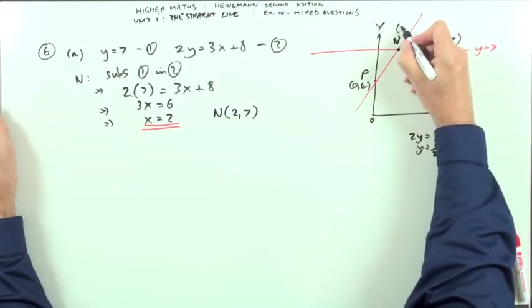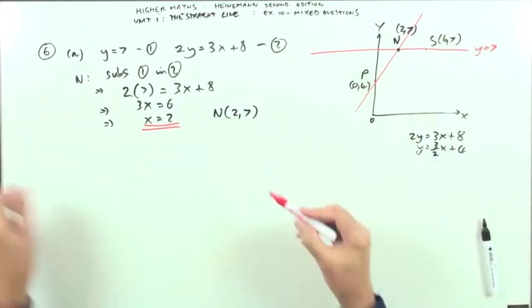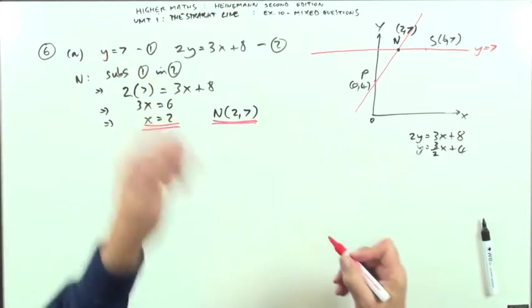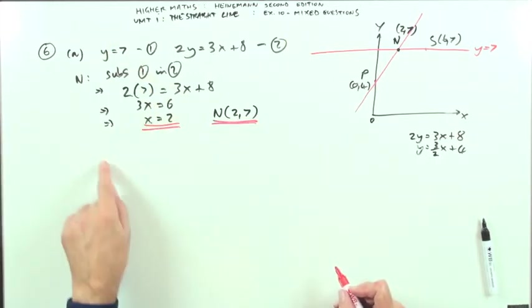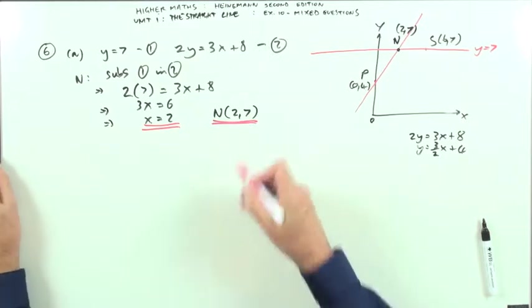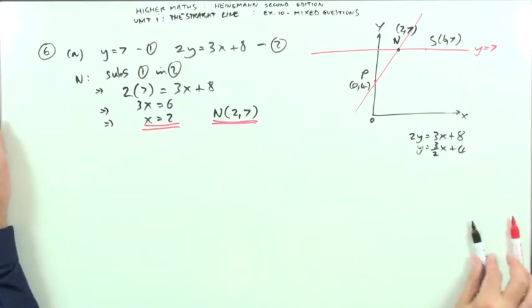So N is the point (2,7). Or maybe we should write it out the way the question was asked for: centre of symmetry (2,7). I'll just leave it like that, save writing that out.